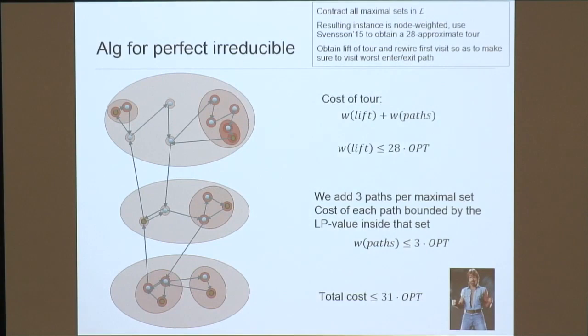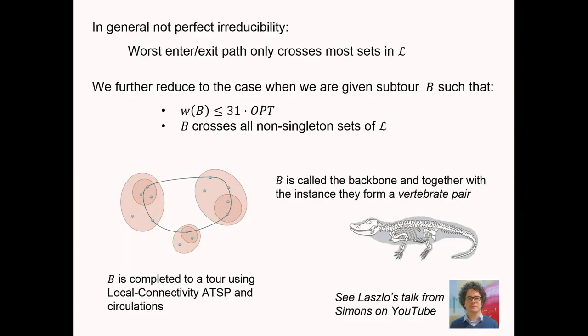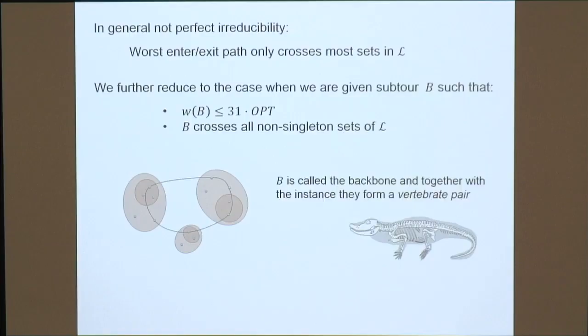In total for perfect irreducibility we get 31 · OPT, so 31 × 8 overall. Without perfect irreducibility, the path crosses most but not all sets. We still do this reduction and walk away with something of cost 31 · OPT that serves as a good backbone — a subtour crossing all non-singleton sets of L cheaply. Inside each set, something from the backbone already passes through, so we just need to connect the unvisited singletons, which is an easier subproblem.